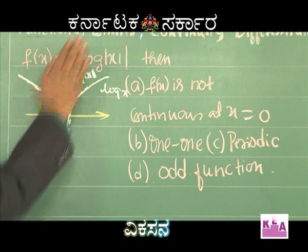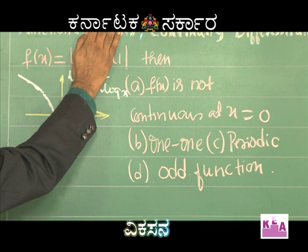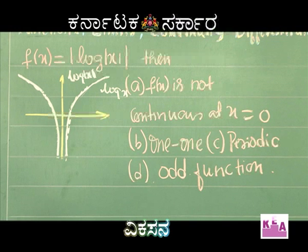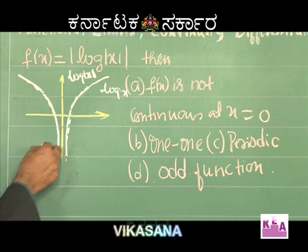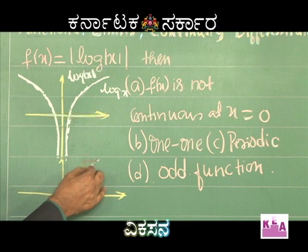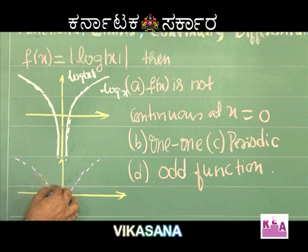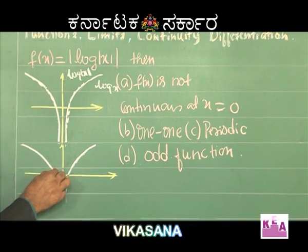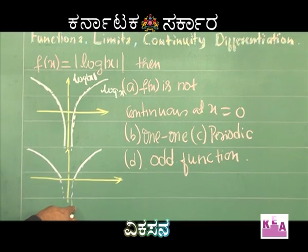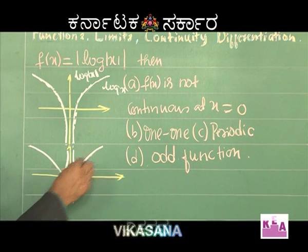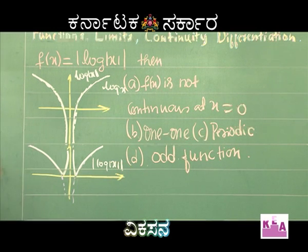Now, how to draw the graph of |log|x||? It is very simple: retain the part of the graph which is above the x-axis, and for the part below the x-axis, draw its replica above the x-axis. Observe carefully — this is log|x|. Retain what is above the x-axis (step one), then draw the replica of the part below the x-axis above it (step two). This gives us the graph of |log|x||.